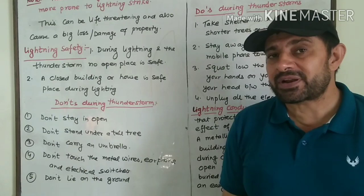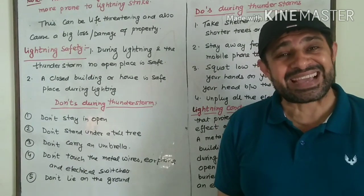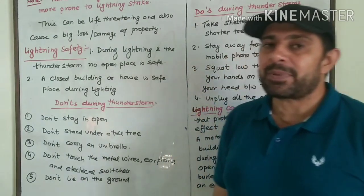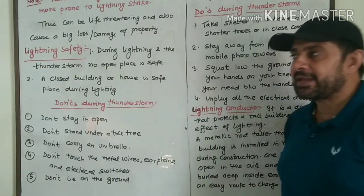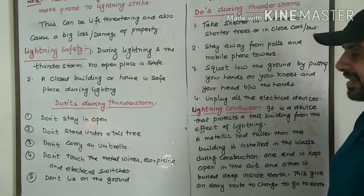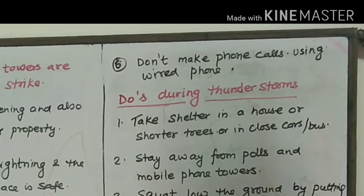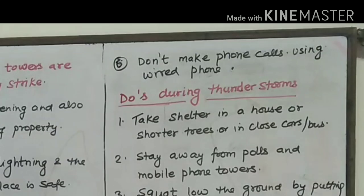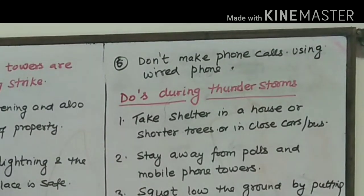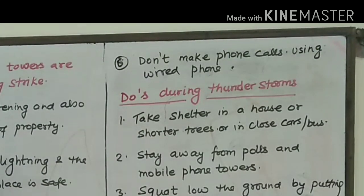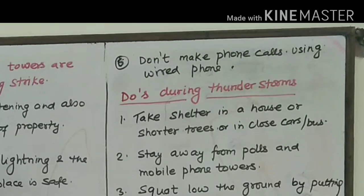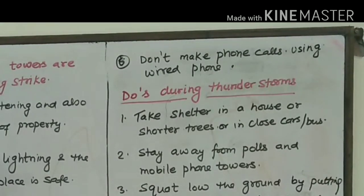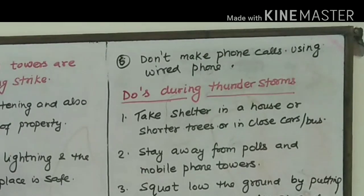Don't lie on the open ground; instead, take a squat position to protect yourself. Number six, don't make phone calls using a wired phone. Your mobile phone is safe during thunderstorms, but making phone calls on a wired phone during a thunderstorm may be a risk.